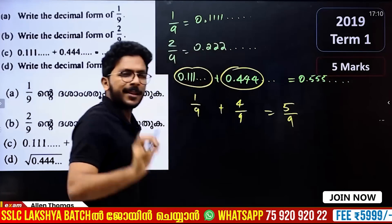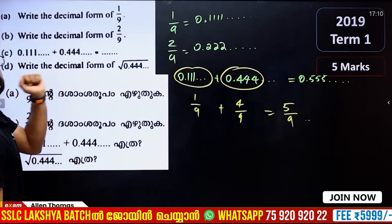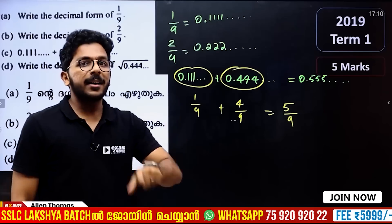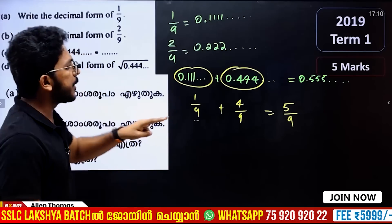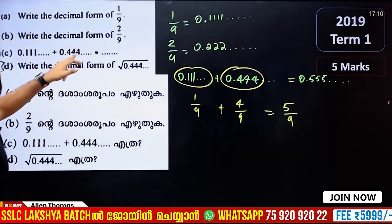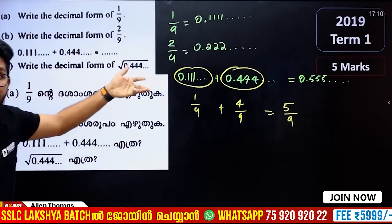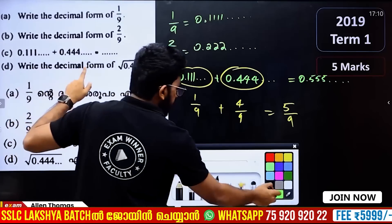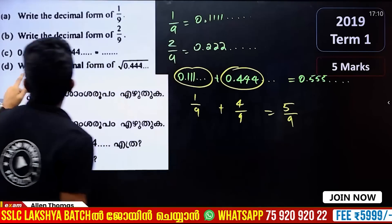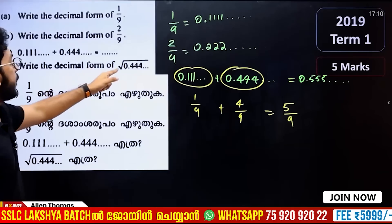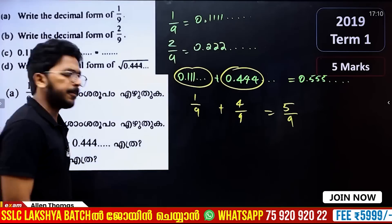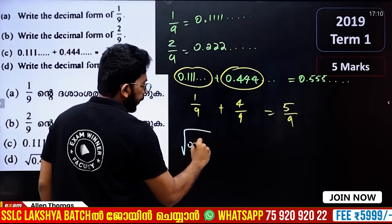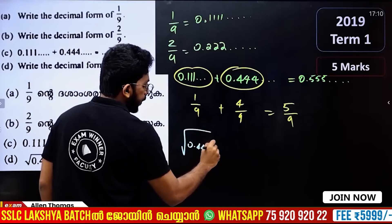5 by 9 is equal to 0.5555... Write the decimal form of the square root of 0.4444...